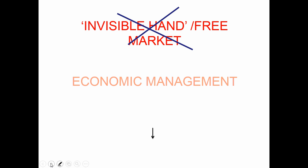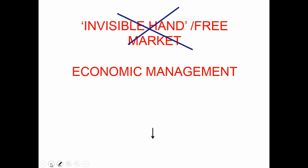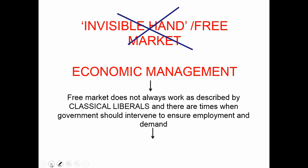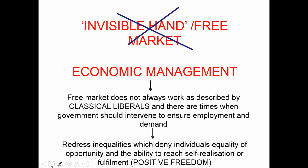The fourth core theme of modern liberalism, economic management, sees a move away from the classical liberal preference for the invisible hand of the market — free market or laissez-faire capitalism — and towards economic management. Whereas classical liberals believed that the market was self-regulating and should be subject to minimum government interference, in the face of recurring economic recessions, and particularly the Great Depression in the 1930s, modern liberals rejected this laissez-faire approach, arguing for greater government intervention during economic downturns in order to maintain employment, demand and prosperity.